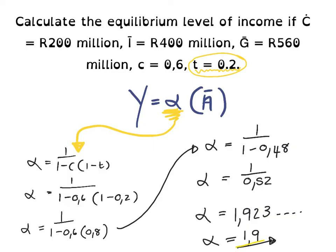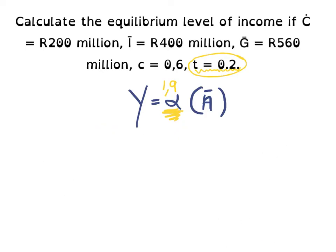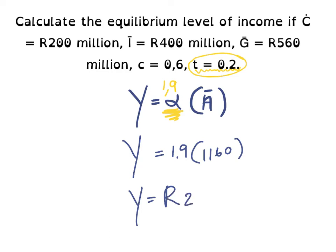The new value of our multiplier is therefore 1.9, and we plug this into our original formula. Step three: Y is equal to alpha times autonomous A. Our new multiplier is 1.9 and we multiply this by our autonomous spending of 1,160, giving us a final value of 2,204 million rand. That concludes our lesson for today — thank you all for watching and I'll see you again next time.